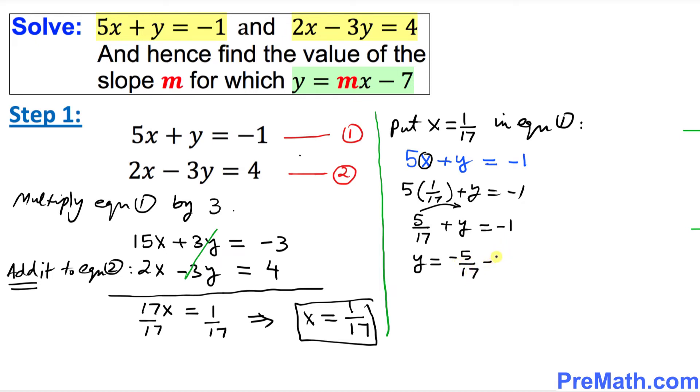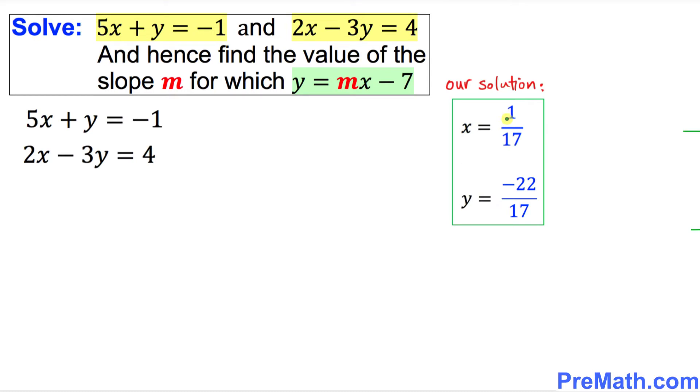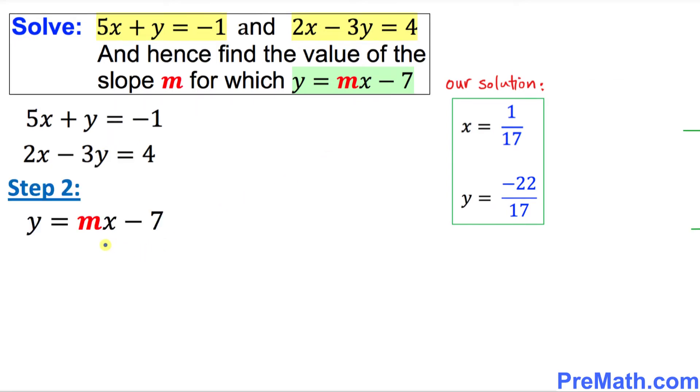So we got y equal to negative 1 minus 5 over 17, and thus y turns out to be negative 22 over 17. I used over here on the right hand side, I just added these two fractions by cross-multiplying, and thus we got x equal to 1 over 17 and y equal to negative 22 over 17 as the solution to these two equations.